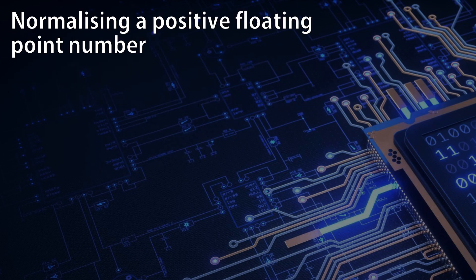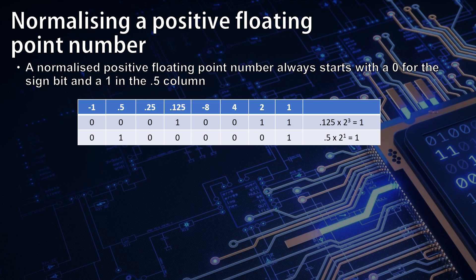A normalized positive floating point number will always start with a 0 for the sign bit and a 1 in the 0.5 column.